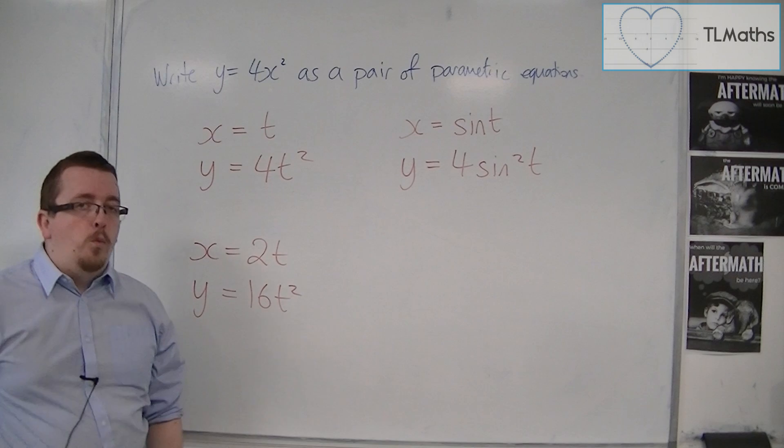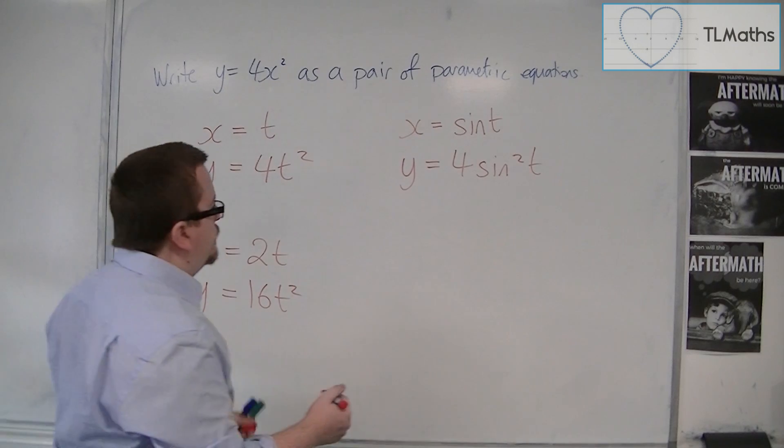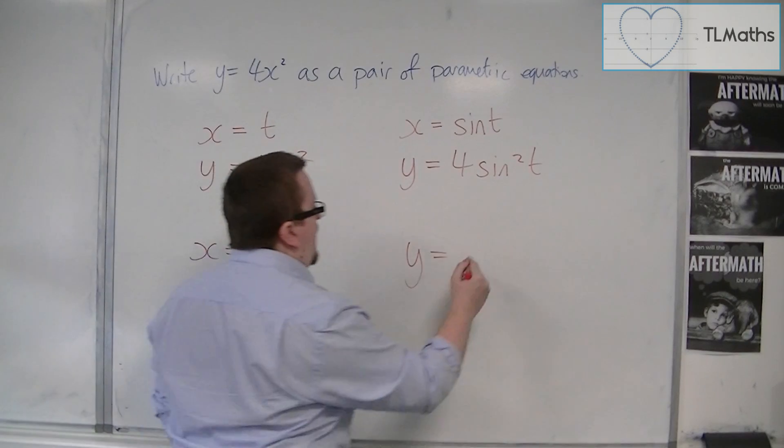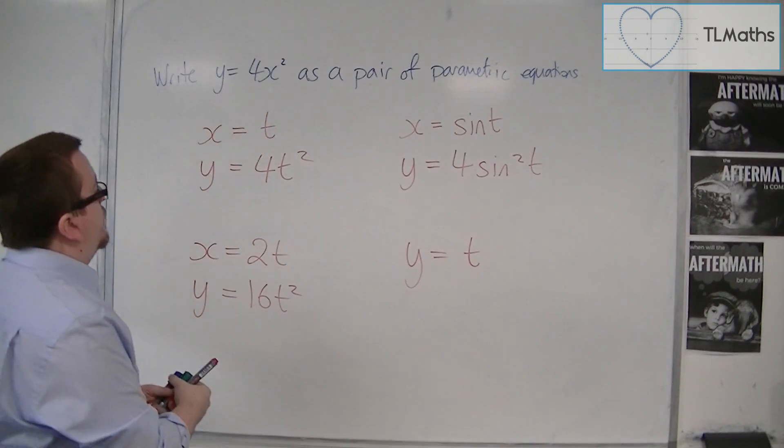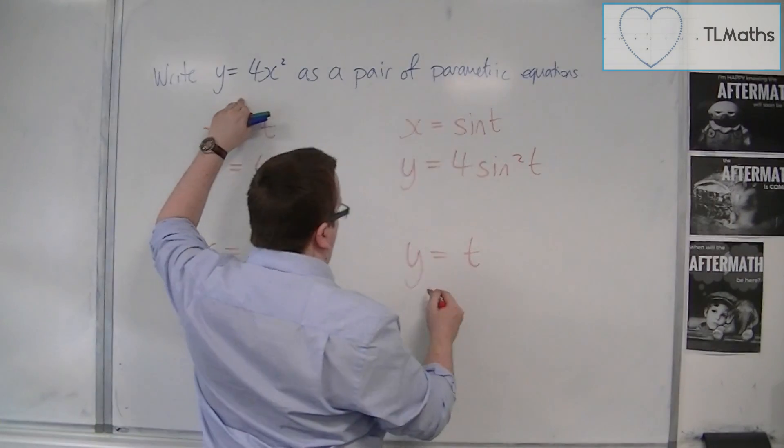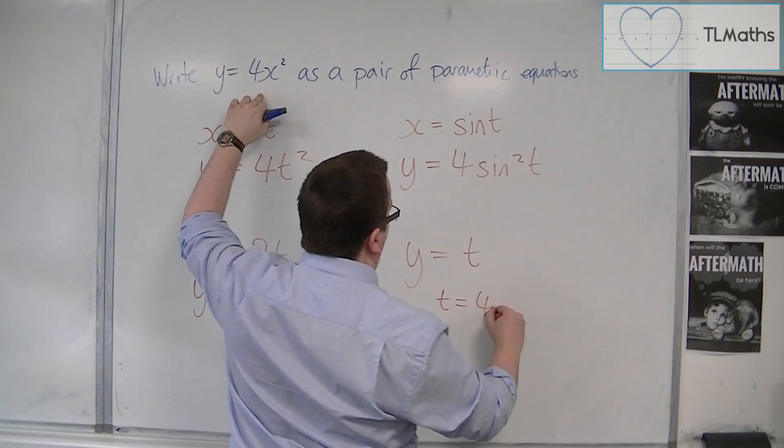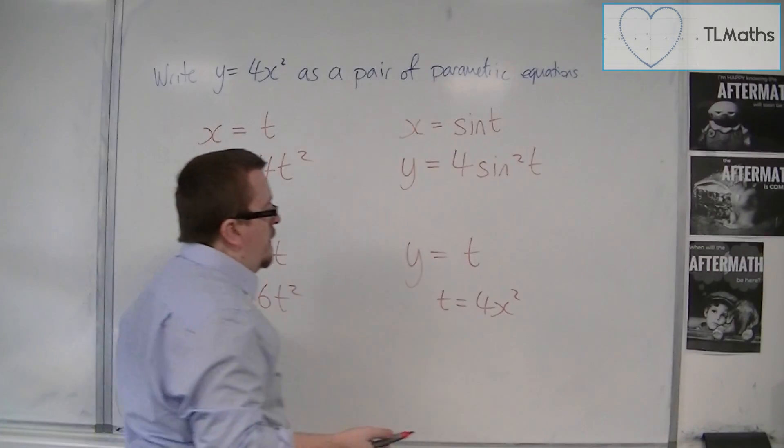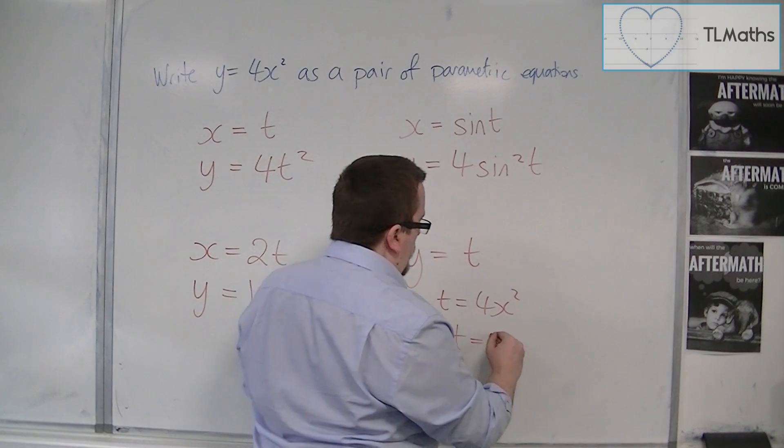If I started with y, we could say things like y equals t. If y is equal to t, then x, well, what we would have is t equals 4x squared, so I've replaced the y with t. You could divide through by 4, so you'd have a quarter t equals x squared.